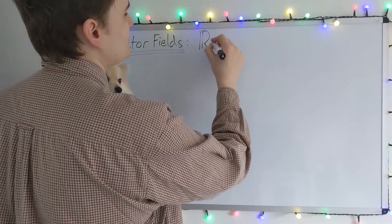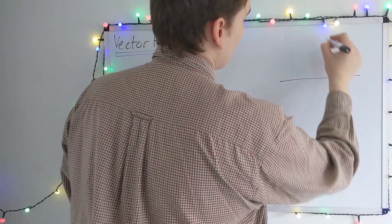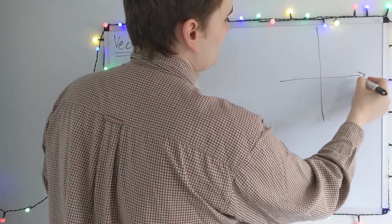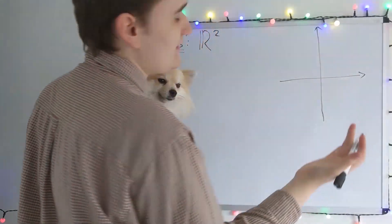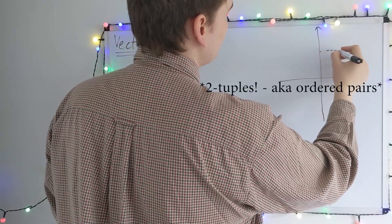I'm going to use R² for simplicity. Now we've already seen that we can think about the points of R² as lying on this kind of Cartesian plane, where the points in R² are just 2-tuples of real numbers.